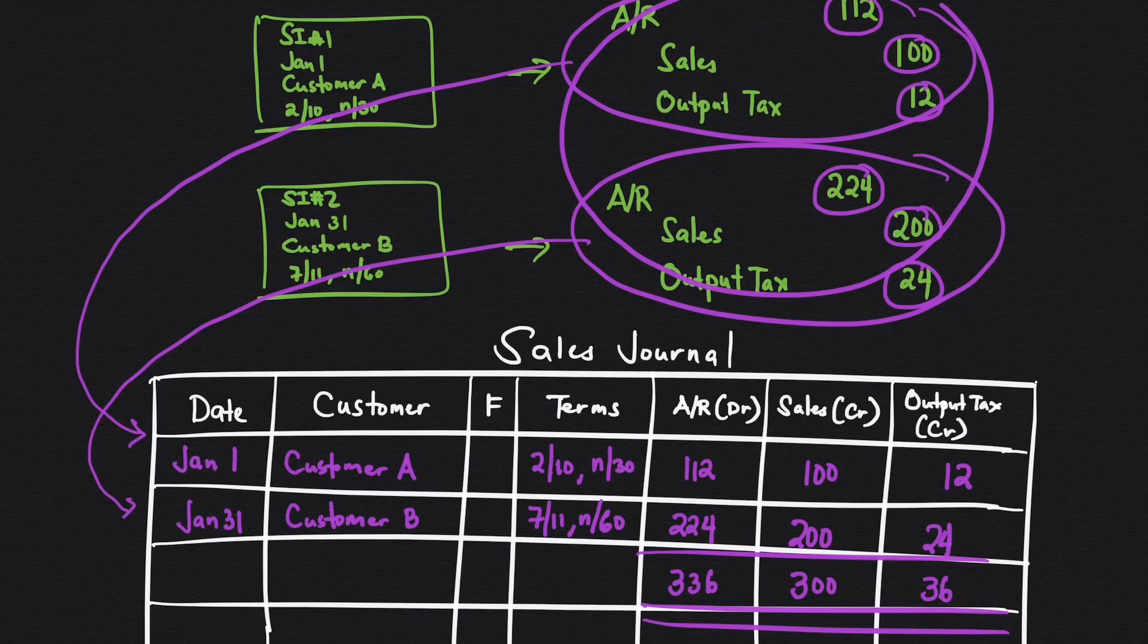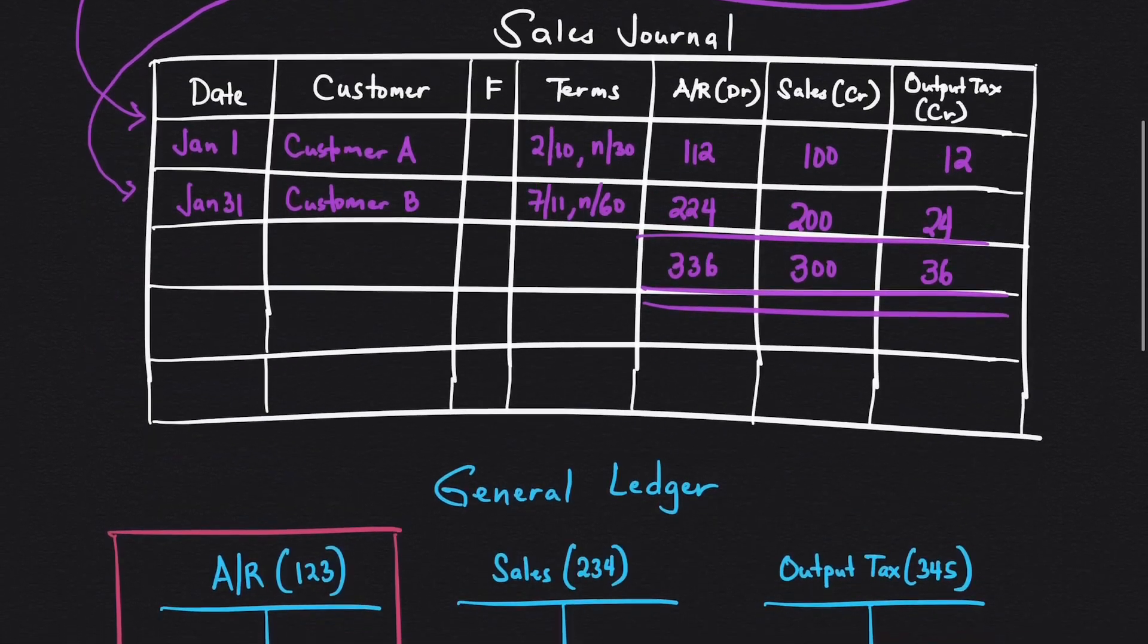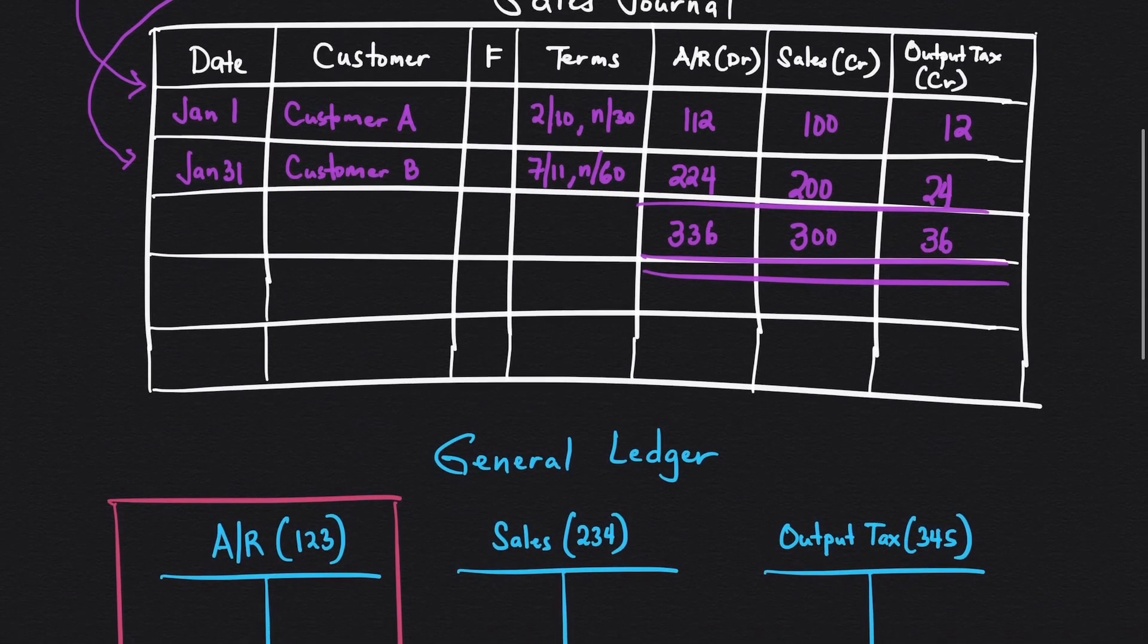After getting the total, that's the time you post. It will be much simpler because you will only be transferring it three times, regardless of the number of transactions. That's another benefit of the sales journal. It provides for simpler posting. So now, how do we post? I have the account titles here in the general ledger, and the account numbers here are just assumed.